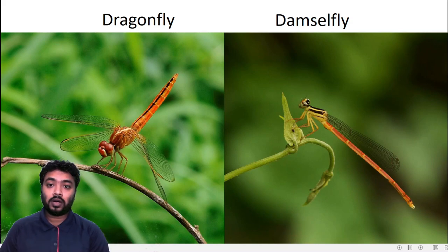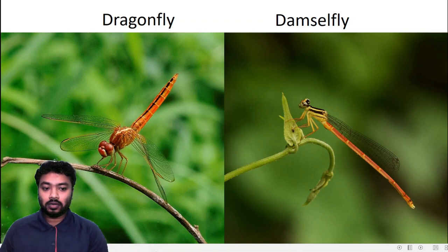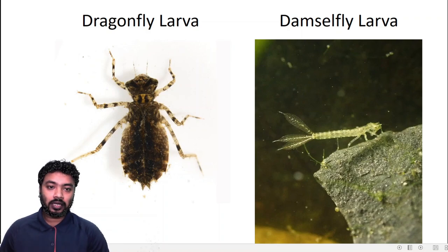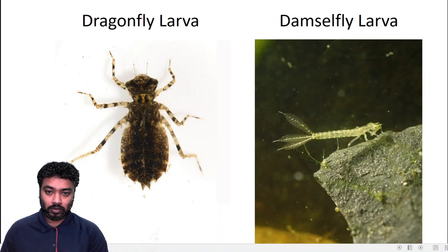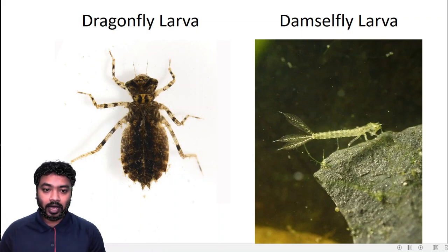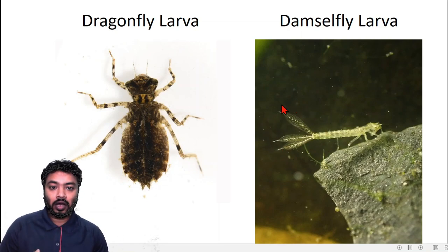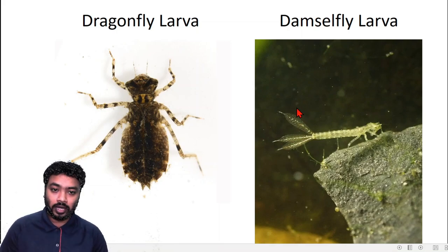We already know how an adult dragonfly and an adult damselfly look like. Now we'll look at Odonata larvae. This is a dragonfly larva and that one is the damselfly larva. The dragonfly larva is much more stout in structure and the damselfly larva is much more slender. The damselfly larva has three gills — these are external appendages, caudal appendages, because they help in respiration but are not the only organ for respiration.